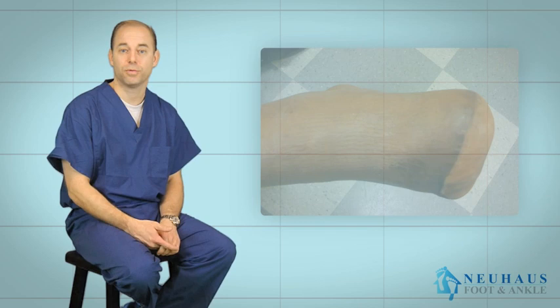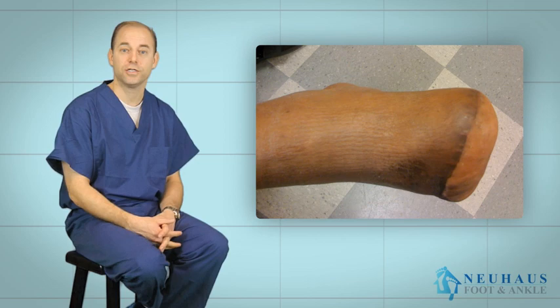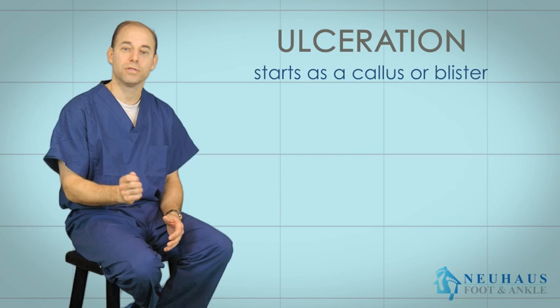...you're setting yourself up for the risk of an amputation. You can develop what's called, at the beginning, what's called an ulceration. An ulceration may start out as what looks like a callus or a blister on the bottom of the foot.